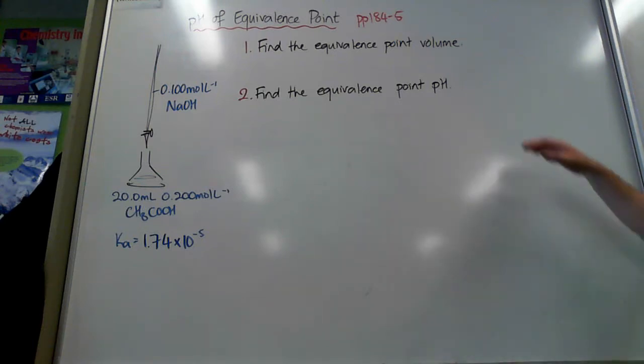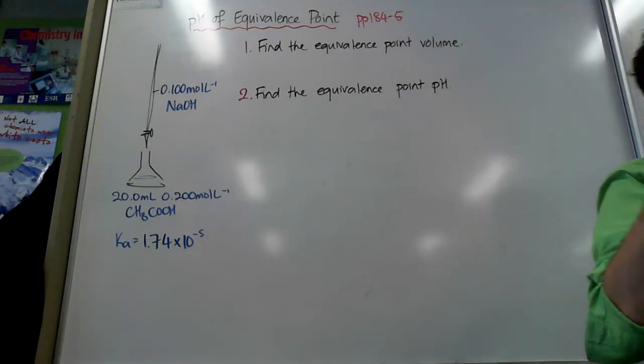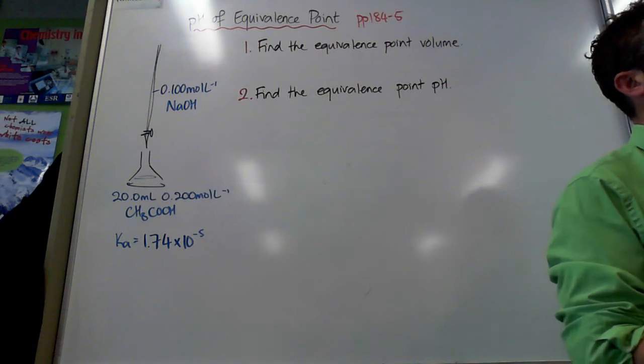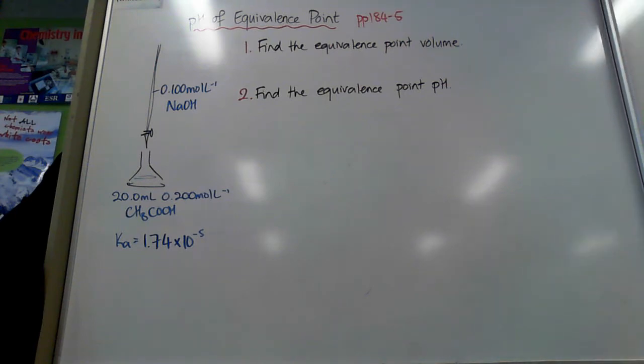So as part of that process we're often asked to find the equivalence point pH. What's also asked of us is to find the equivalence point volume and that's actually not as hard as it sounds. Once we know the equivalence point volume we can find the half equivalence point volume and that's where our buffer, the middle of our buffer region is.